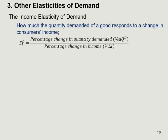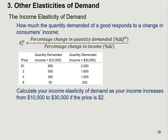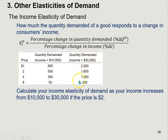We're going to use a straightforward example to show how we could calculate the income elasticity of demand. Suppose this is a demand schedule for cheeseburgers on a local market. The first column is price, the second column is quantity demanded when income is $10,000, and we have an additional column showing the quantity demanded when income is $30,000.